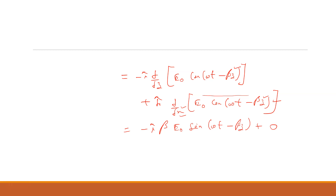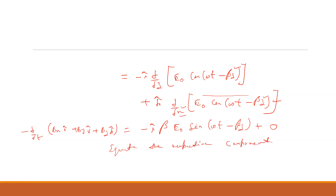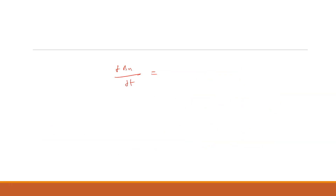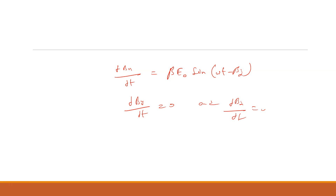Equating the respective components from both sides — the left side had −d/dt(BX î + BY ĵ + BZ k̂) — we get: dBX/dt = β · E₀ · sin(ωt − βz) as equation 3a, and dBY/dt = 0 and dBZ/dt = 0 as equation 3b.